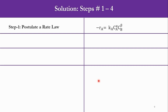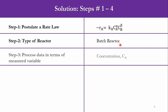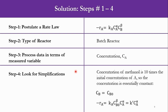Following the algorithm for data analysis — step 1: since it is a homogeneous system, we apply the power law model: −rA = kA · Ca^α · Cb^β. Step 2: type of reactor is a batch reactor. Step 3: measured variable is concentration. Step 4: assumption — methanol is in excess, so Cb equals Cb0. Combining these gives a pseudo rate constant k', so the rate becomes k'·Ca^α.